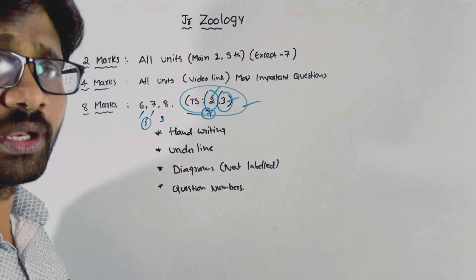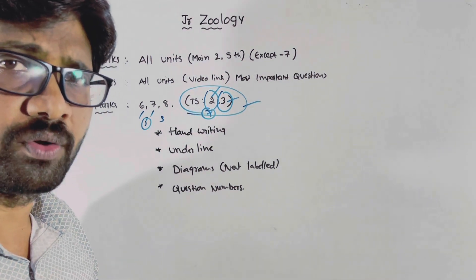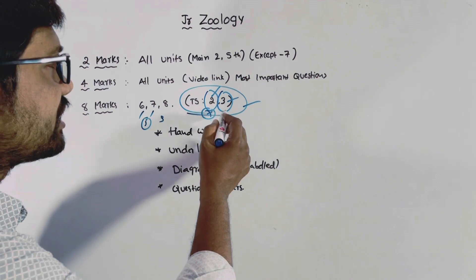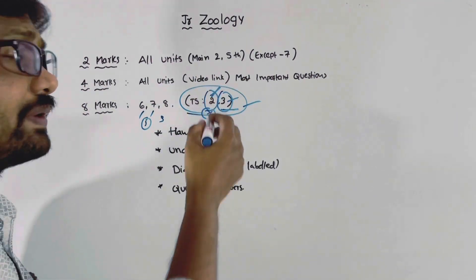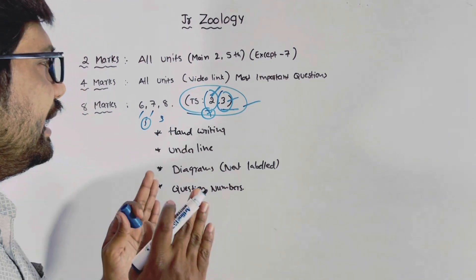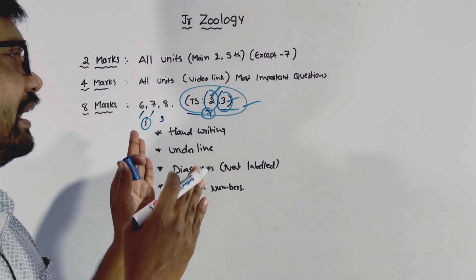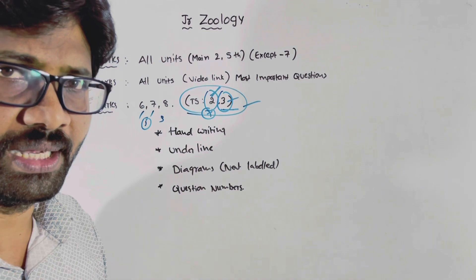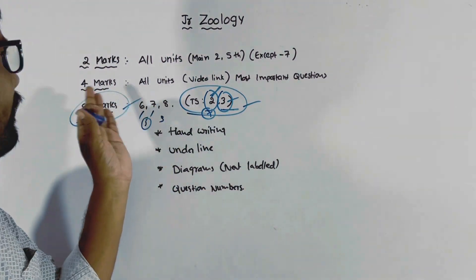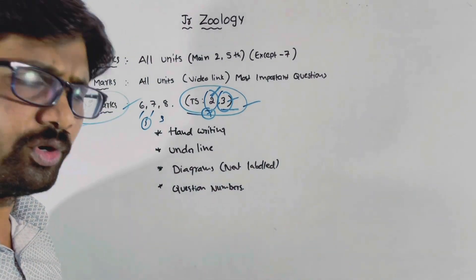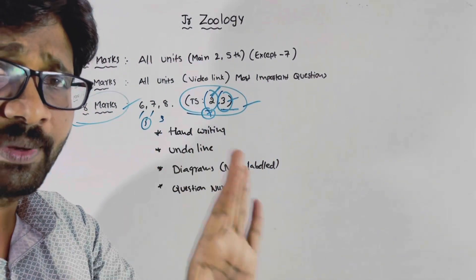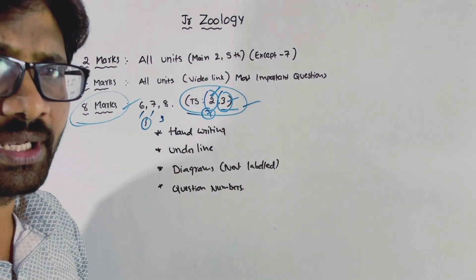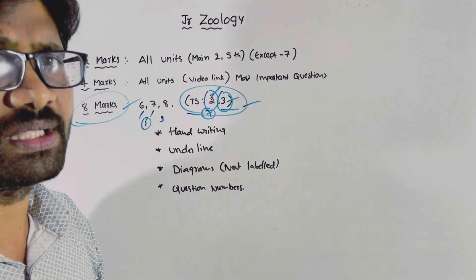Periplaneta — one chapter, one from general topics. For the SS point of flow, choose one from the first chapter and one from the second chapter. Focus on the second chapter. For the remaining 4-mark questions, each chapter has one most important item. From the most important questions list, 100% of them will be useful — study those first, then the remaining list. Minimum 4-5 questions from the important list will definitely appear.